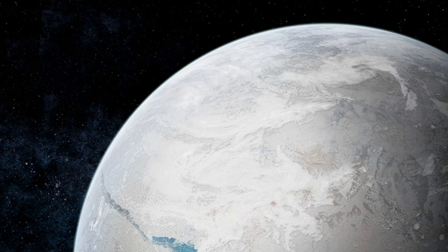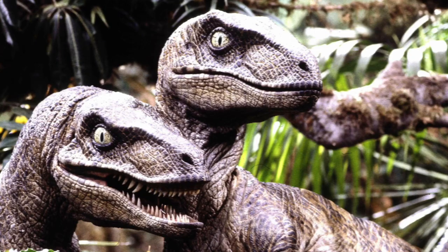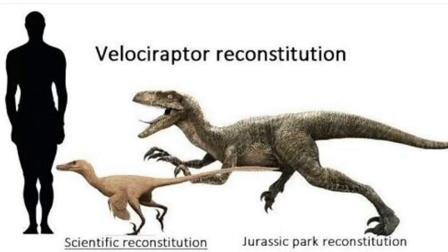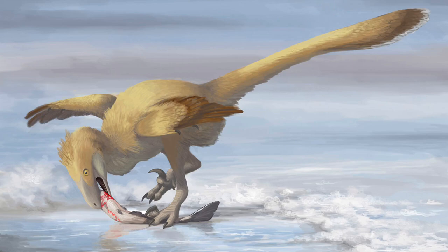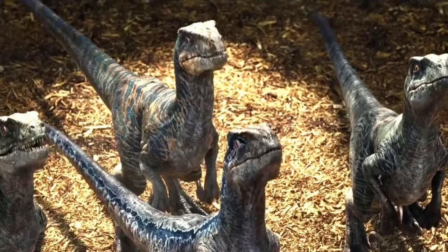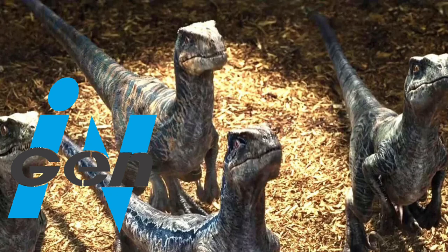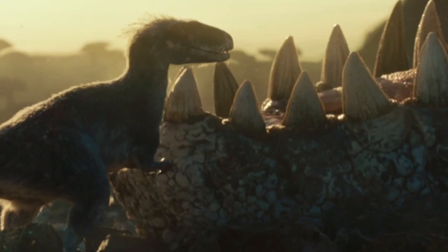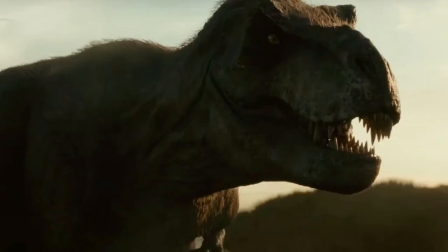Jurassic Park Raptor. This is one entry everyone would know. Not only is it featherless, but it's also twice the size of an actual Velociraptor. Popular media has since gone on to portray Velociraptor like this. It's not even based on Velociraptor, but a bigger related dinosaur called Deinonychus. Even though these inaccuracies are notable, these raptors are actually InGen's own genetically modified creatures — which also explains why some extinct dinosaurs in Jurassic World Dominion's prologue are feathered, yet InGen's ones aren't, since they are genetically modified.